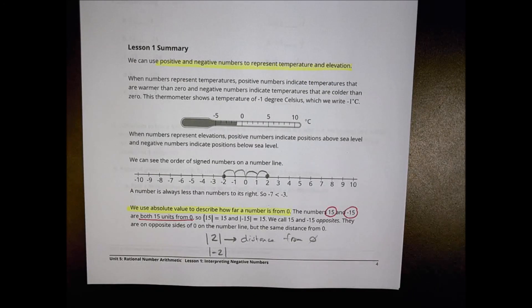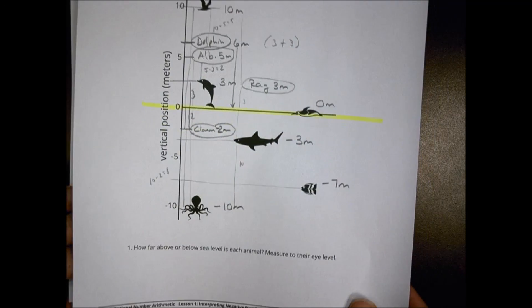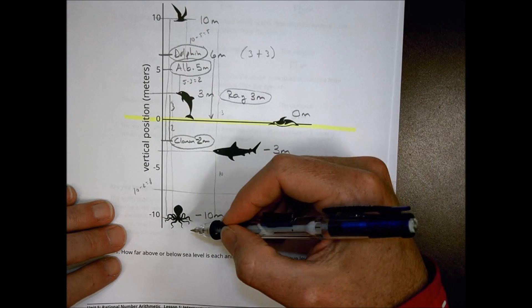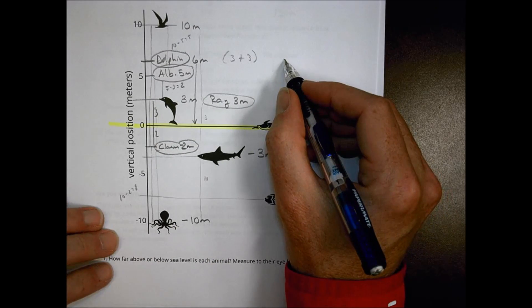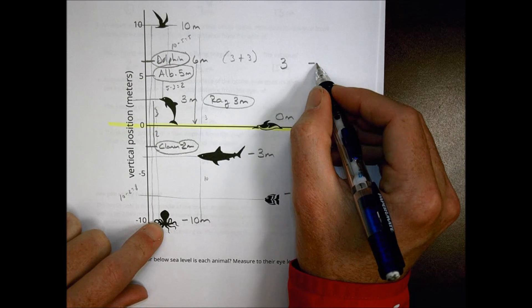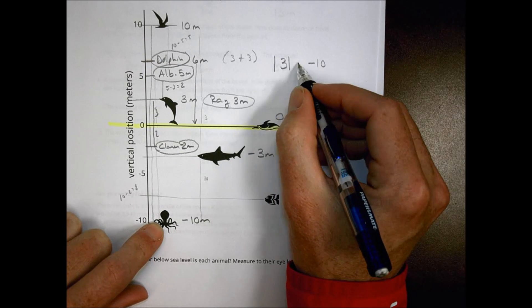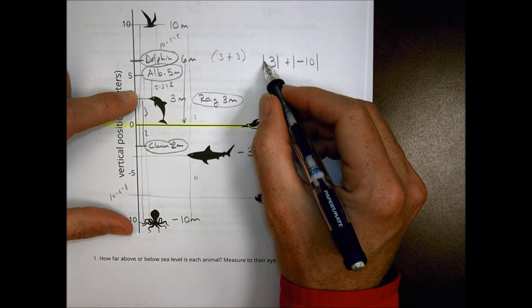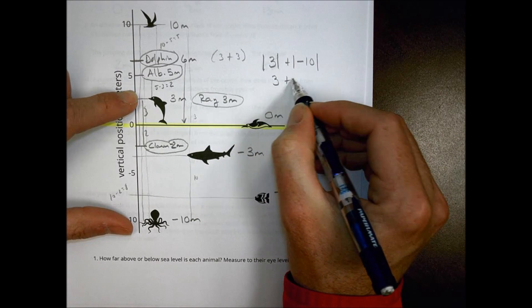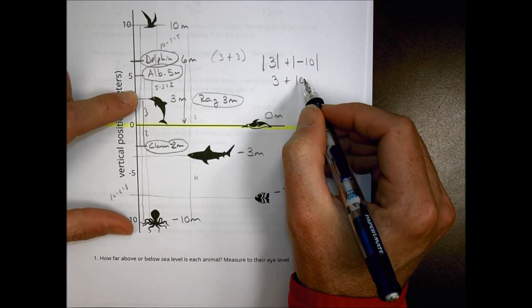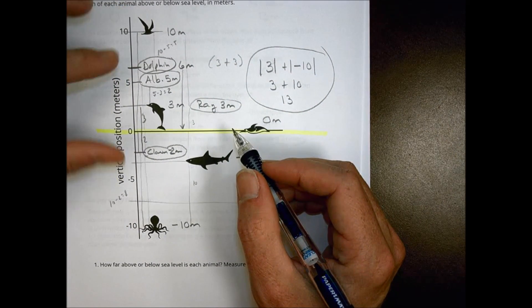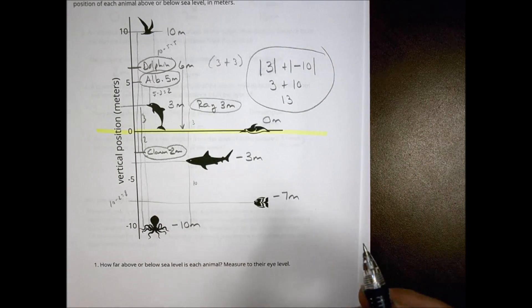I know we didn't do a lot with absolute value today, but it's what we were really doing in the examples. When you look at the dolphin at 3 and the octopus at negative 10, we're adding the absolute value of those numbers together to find how far apart they are. The absolute value of 3 is 3, the absolute value of negative 10 is 10, and the total distance is 13. That's what we were doing with the animal pictures — using absolute value to find the distance between animals.